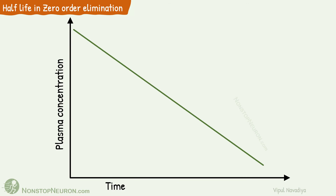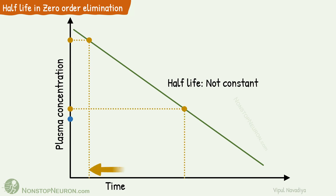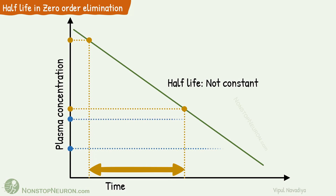Now let's come to zero-order kinetics. Here, rate of elimination is constant irrespective of plasma concentration. Because of that, plasma half-life varies at different concentrations — in other words, it's not constant. For the first point, the half concentration and time required are measured. And for the second point, the half concentration and time required are also measured. As you can see, it's not the same. If you measure half-life from different points, you will get different results. Thus, plasma half-life is not constant in zero-order elimination kinetics.